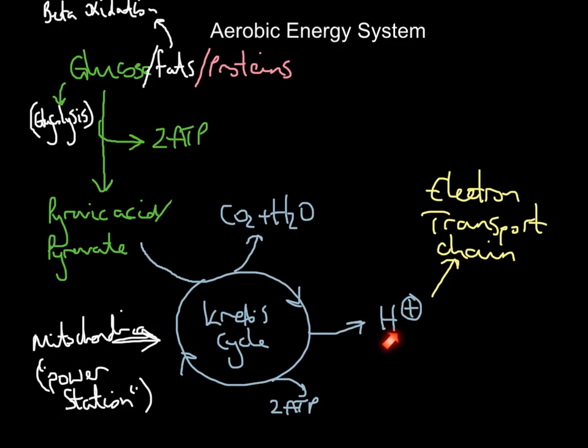So the electron transport chain—what can we say about it? Well, the hydrogen atoms enter it, and as a result of them entering it, a lot of energy is produced. So much so that I can then resynthesize 32 to 34 more ATP off the back of this energy system.